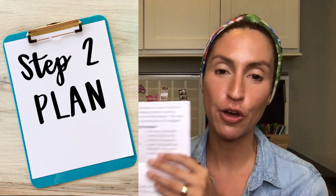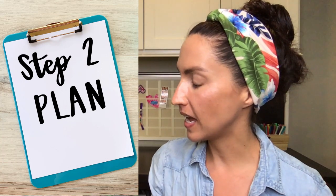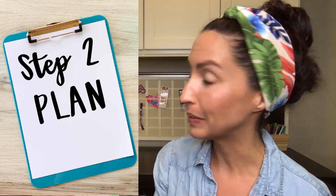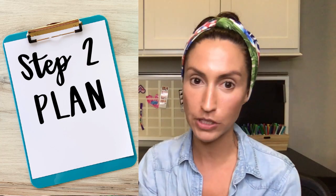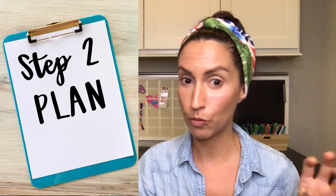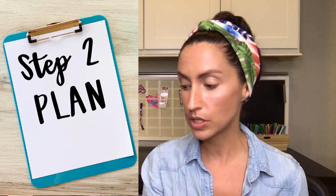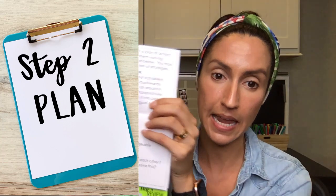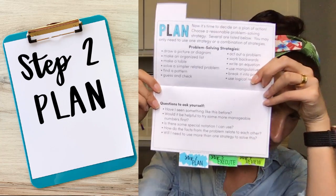Step two is plan. Now it's time to decide a plan of action and choose a reasonable problem-solving strategy. Strategies include: draw a picture or diagram, make an organized list or table, solve a simpler related problem, find a pattern, guess and check, act out the problem, work backwards, write an equation, use manipulatives, break it into parts, or use logical reasoning. There are also little question prompts students can ask themselves as they work through this step.